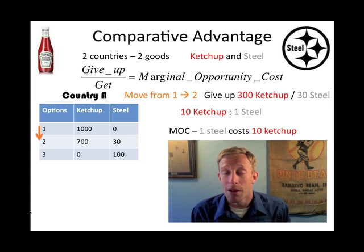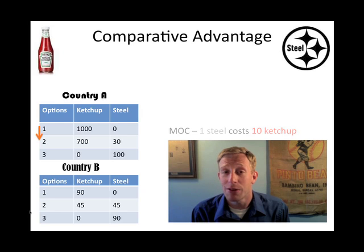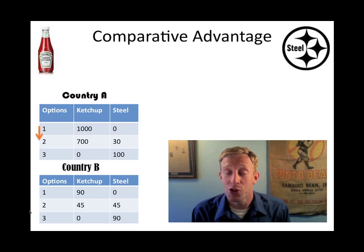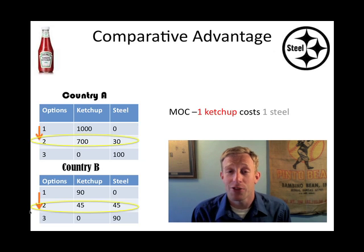Country B has three production possibilities as well. They can produce 90 gallons of ketchup and zero steel, 45 ketchups and 45 steel, or zero ketchup and 90 units of steel. If we figure out the marginal opportunity cost for Country B, we find a ratio of 1 ketchup to 1 steel. Left to their own devices, these two countries may choose option 2 on their production possibilities curves, because this allows them to have a little bit of both goods — and based on this limited table, that's the only option that allows them to have both goods.